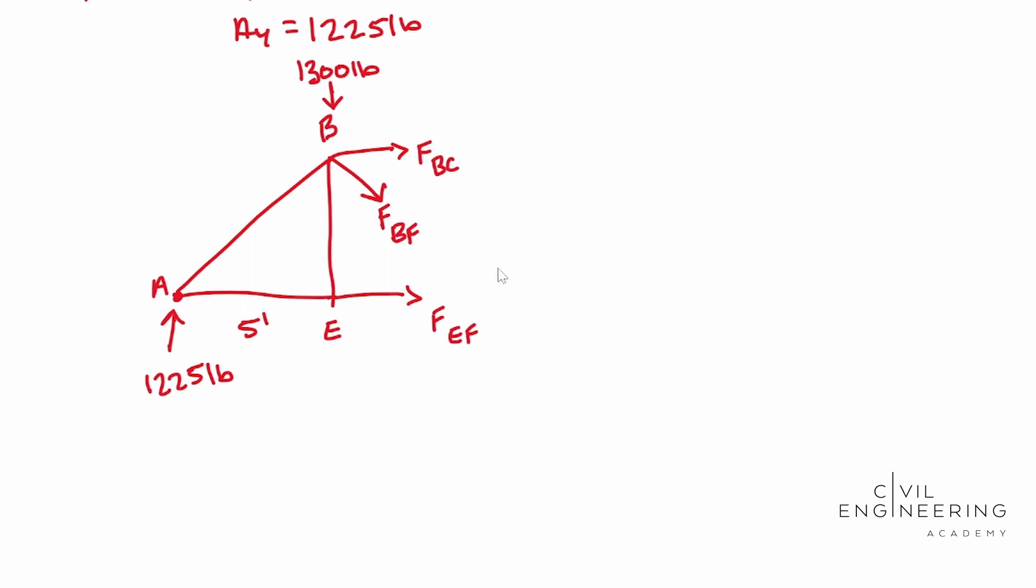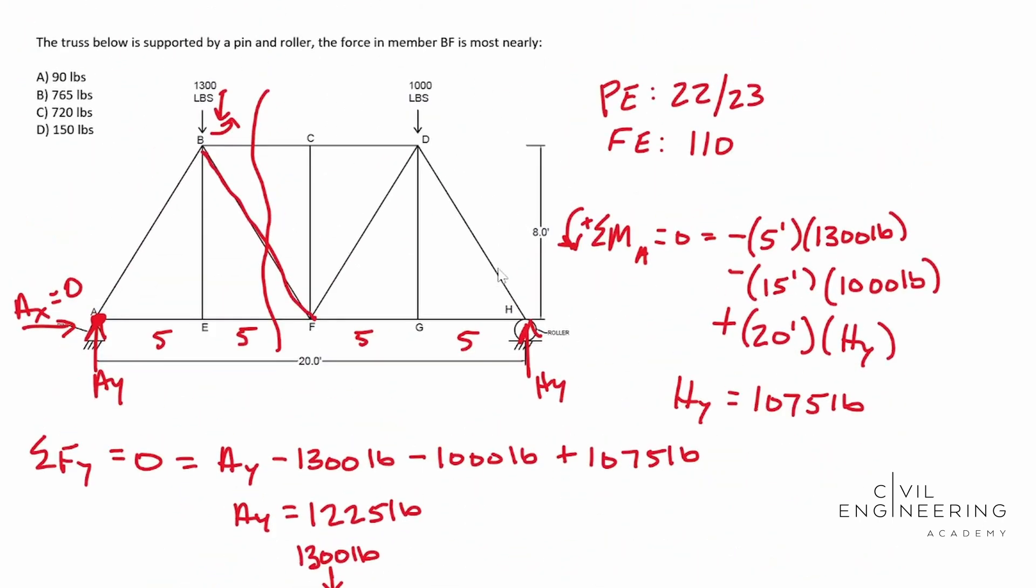Notice our only unknown in the Y direction is FBF. FBC is going in the X direction. FEF is going in the X direction. So if we take the sum of forces in the Y, the only unknown we have is the force in member BF and that's what we're solving for. So that's what we're going to do here. Let's take the sum of forces in the Y is equal to zero. So now this is our new truss that we're going to analyze right here. So this guy is going to be 1225 pounds, minus 1300 pounds. And then we have something else that I missed here, the Y distance right here. This is actually going to be eight feet, based off the initial diagram. We see that it's eight feet right here and it's the total length. So we're going to use eight feet.